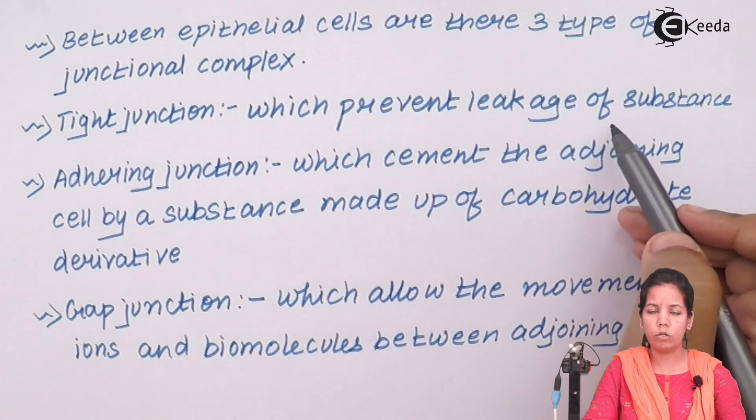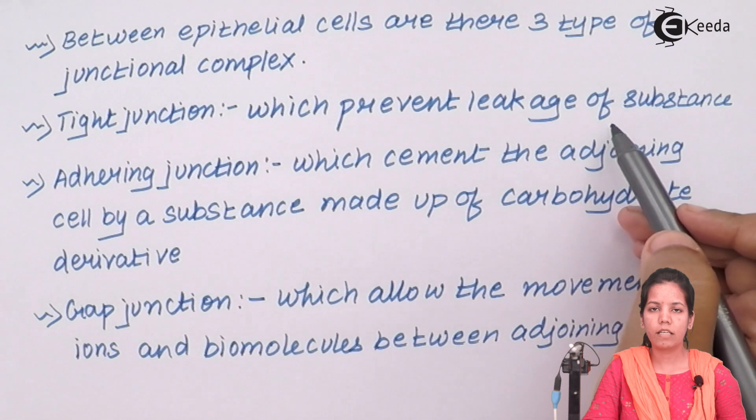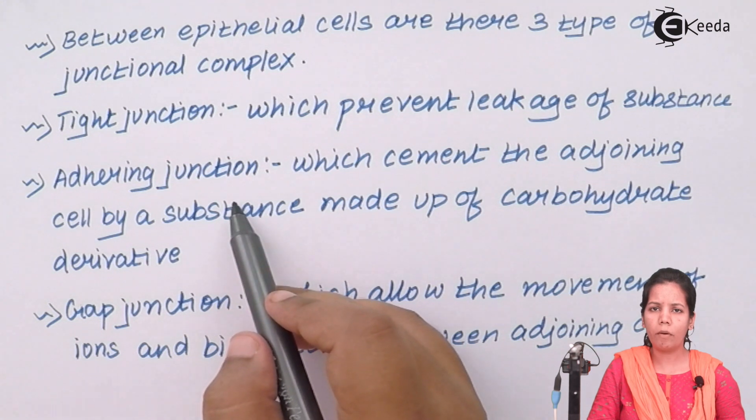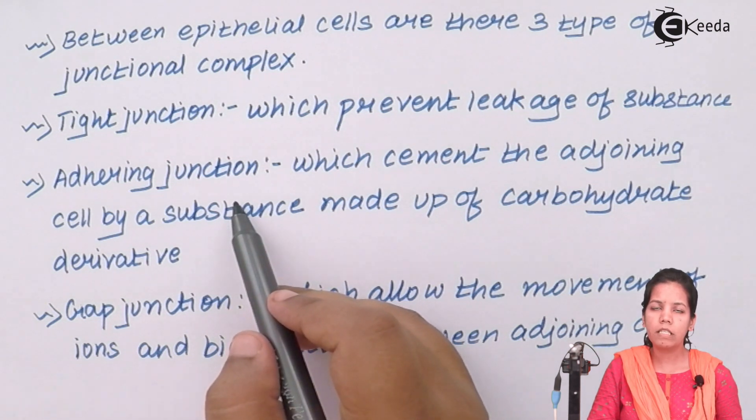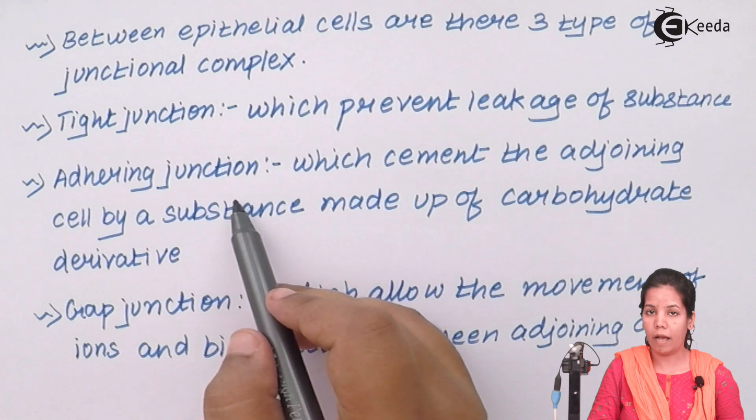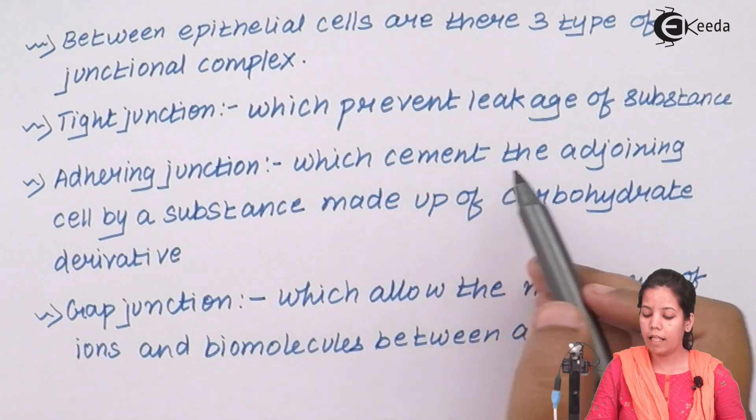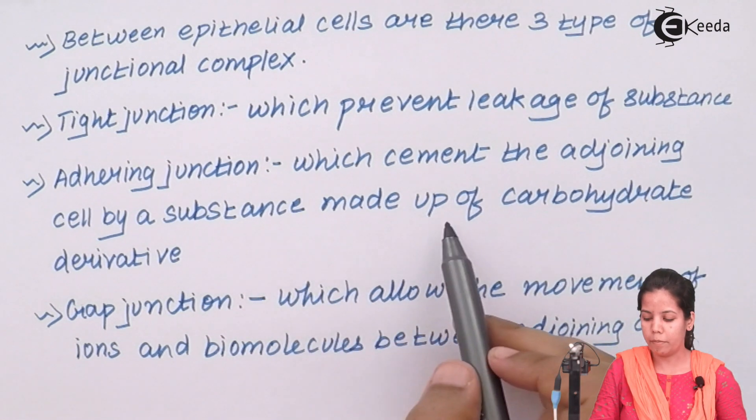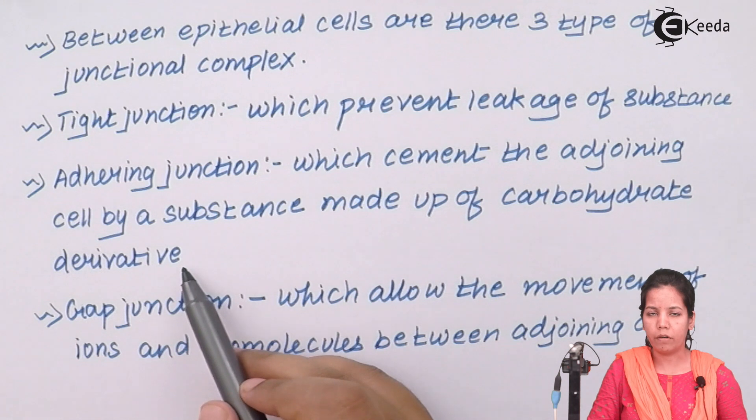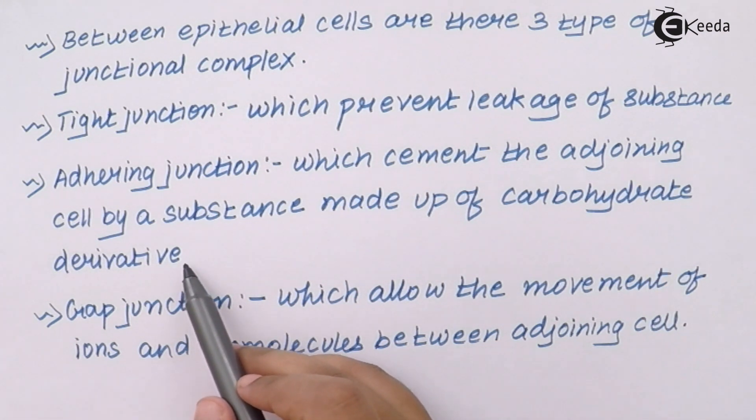Adhering junctions - when you talk about the word adhering, it means something that sticks around. Adhering junctions cement or, in simple language, allow the adjoining cells to stick together by a substance made up of carbohydrate derivatives. This carbohydrate derivative could be a disaccharide or sometimes a polysaccharide depending upon the source. For example, in some woody plants it is chitin, and in other plants this could be starch.